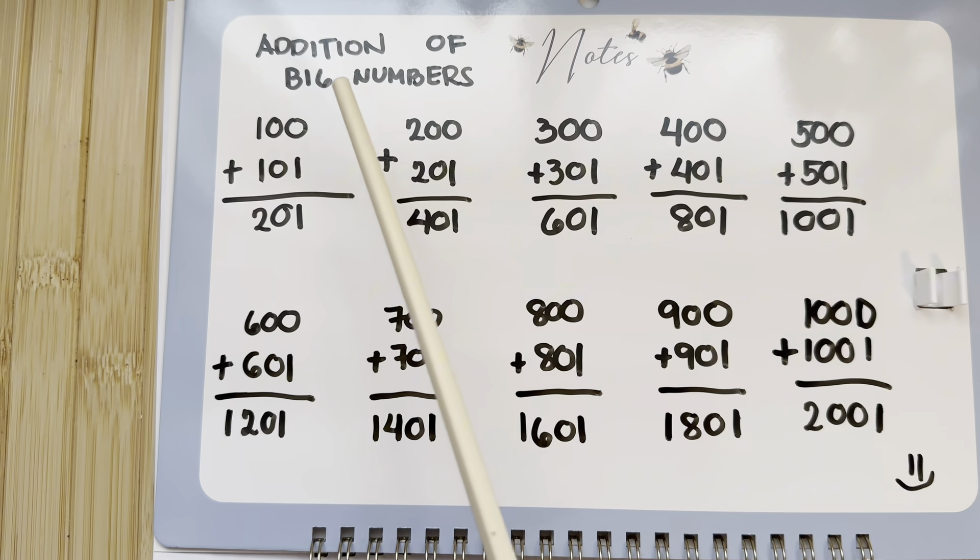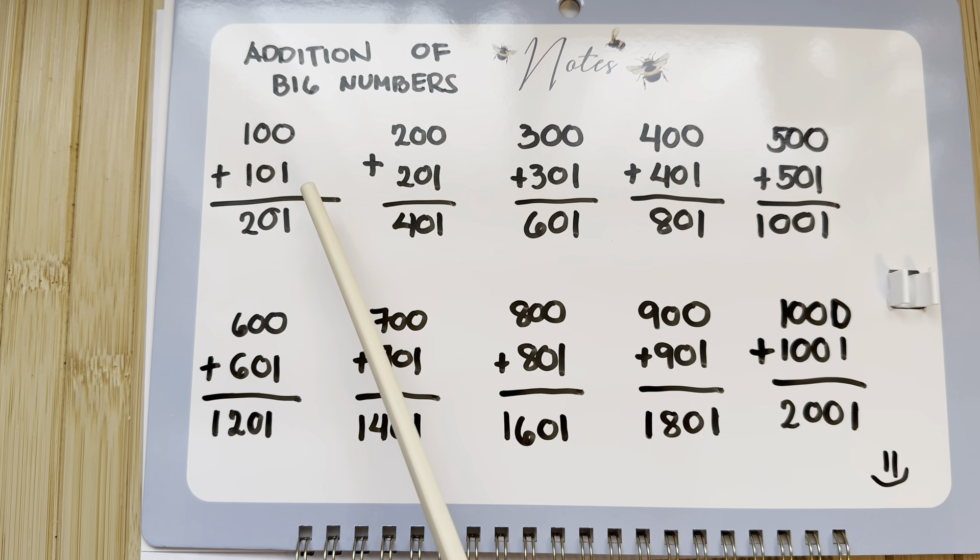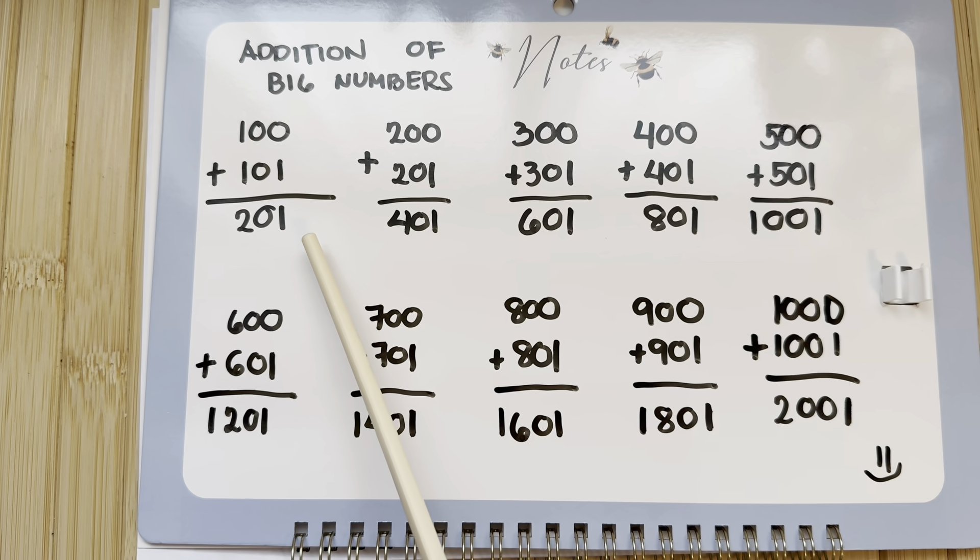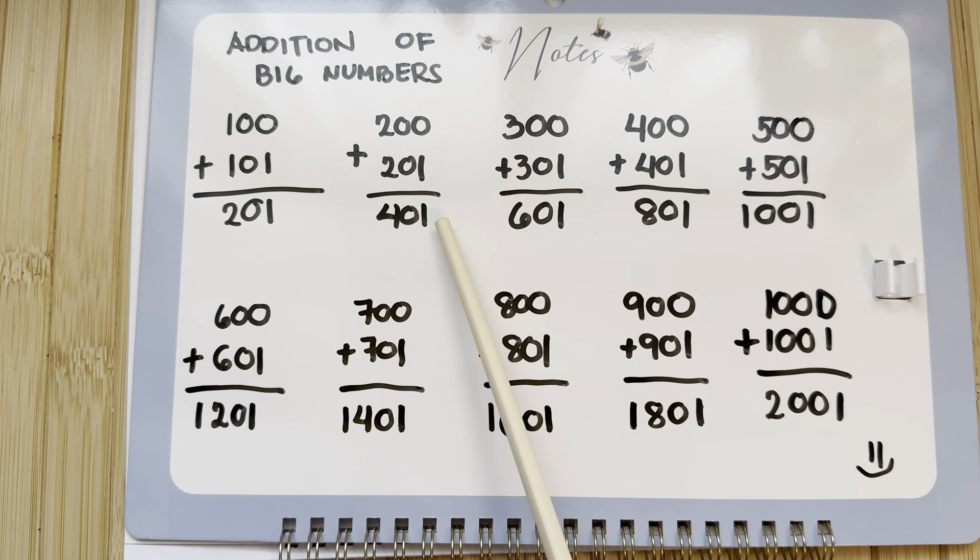Let's learn addition of big numbers! 100 plus 101 equals 201. 200 plus 201 equals 401.